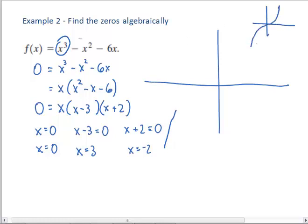Here I'm going to plot the zeros. I have one zero at negative 2, and I have one at 3, and I know that as I come into the function it's going to have this general behavior.